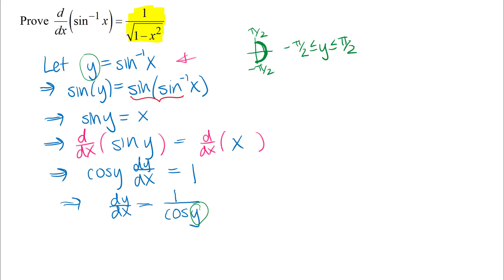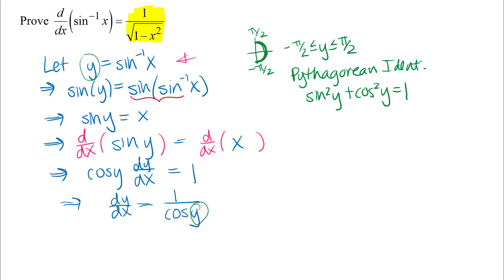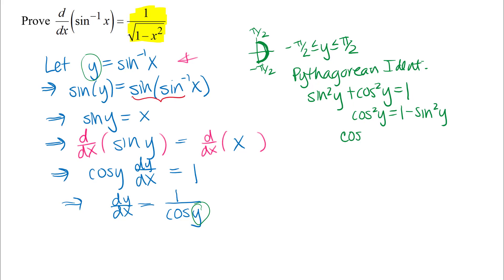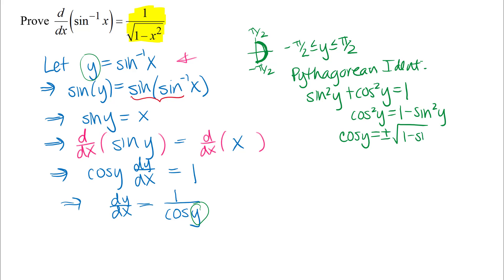Another thing I need to use is a Pythagorean identity. There are lots of ways to write it — I'll use y as the angle: sin²(y) + cos²(y) = 1. I'm going to use that to rewrite my expression in terms of x. First, I'll solve this identity for cosine of y by subtracting sine squared from both sides: cos²(y) = 1 − sin²(y). Then taking the square root of both sides gives cosine of y equals plus or minus the square root of 1 minus sine squared of y.